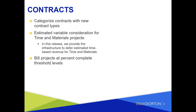This lets you defer revenue and then recognize it as your performance obligations are met. Note that time-and-material projects are not yet available as part of multi-element arrangement (MEA) allocations, but that is on the roadmap for a future release. Also, when you've overestimated your variable consideration - maybe you thought something would bring in more revenue than it did - they've added an automated tool that lets you click 'Revalue' to write down the rest of that estimate and reverse your unbilled portion. Very handy for contracts with variable consideration linked to a time-and-materials project.